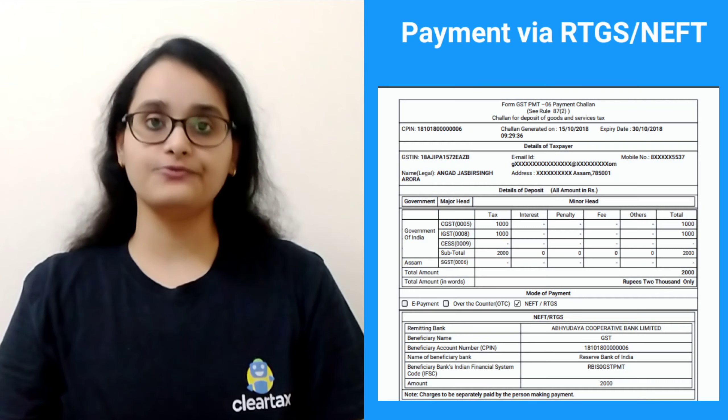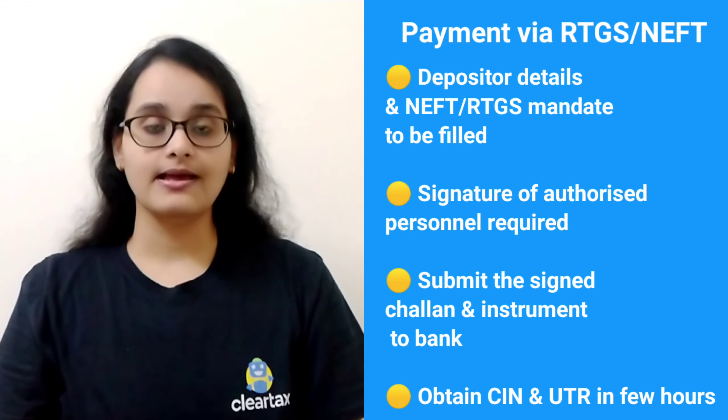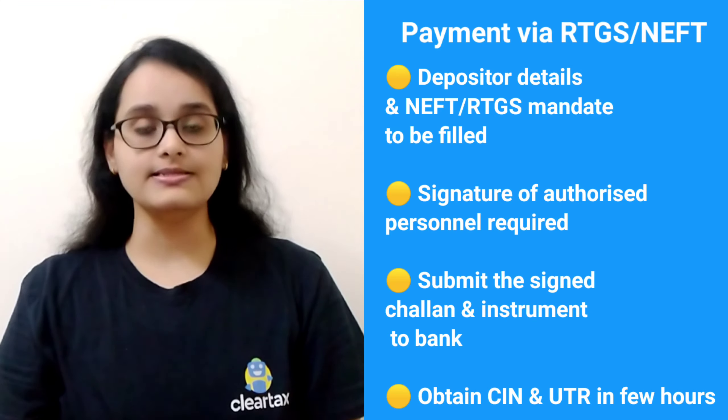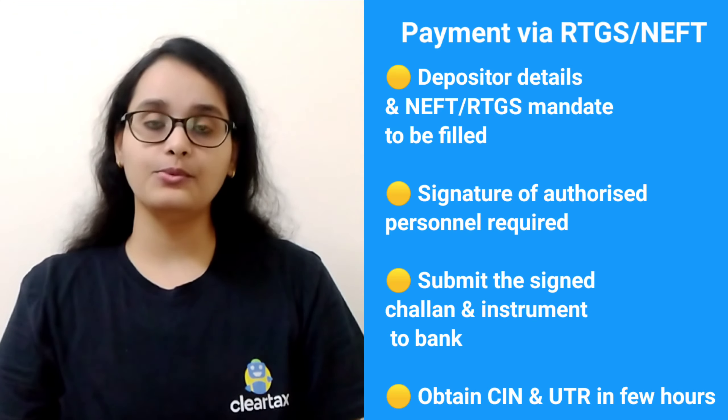If you have chosen RTGS or NEFT as the payment mode while generating the challan, take the printout of the challan, fill in certain details, sign it and submit the same to the bank. The bank will process it and issue a UTR number within a few hours. Thereafter, log into the GST portal and link the UTR number against a particular challan, and your cash ledger gets updated.